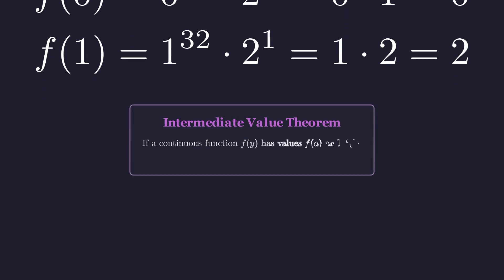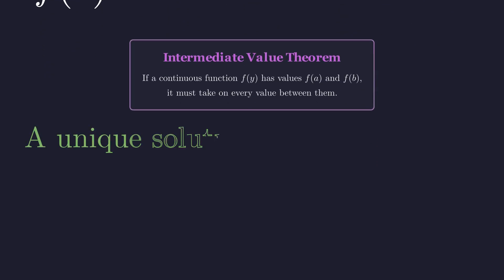The function f of y is continuous for positive y. Because it goes from 0 to 2, the intermediate value theorem guarantees it must cross the value 1 somewhere in between. In fact, since the function is always increasing for positive y, there is exactly one solution for y, which we can call y naught, between 0 and 1.